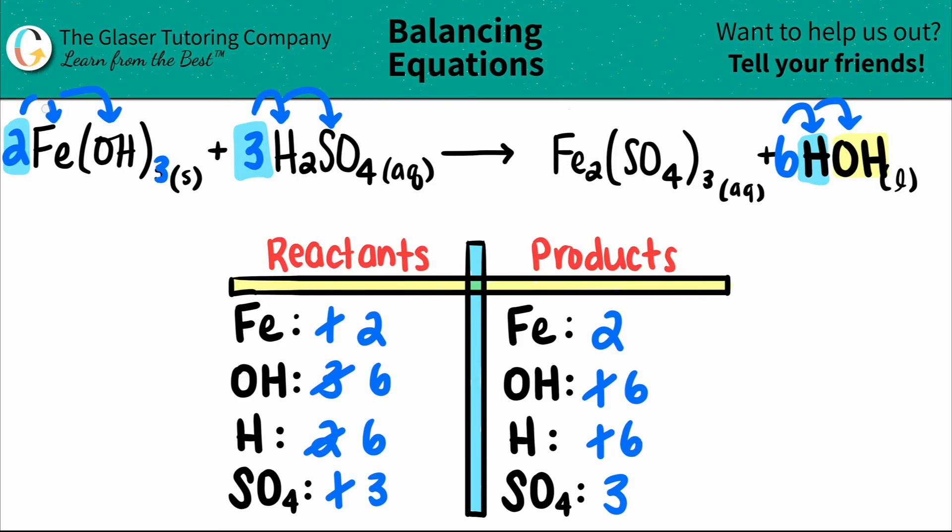And all the numbers are now balanced. So we are officially done. So in this balanced equation, we have two Fe(OH)3s plus three H2SO4s. And that will produce Fe2(SO4)3. There's one of them. So one Fe2(SO4)3 plus six HOHs. Or you could write it as six H2Os. And that's it.